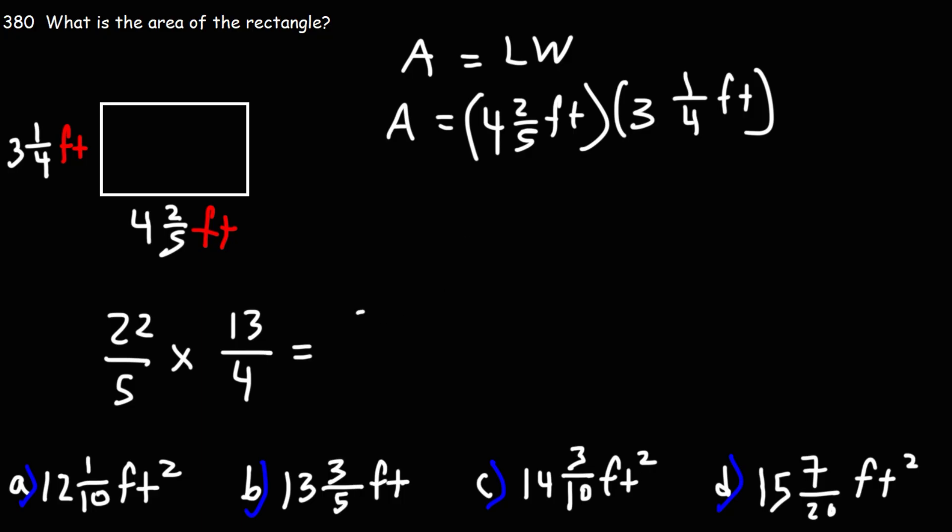Now 22 is 2 times 11, and 4 is 2 times 2. So before we multiply, we can at least cancel a 2. 11 times 13 is 143. 5 times 2 is 10. So this is the answer as an improper fraction.